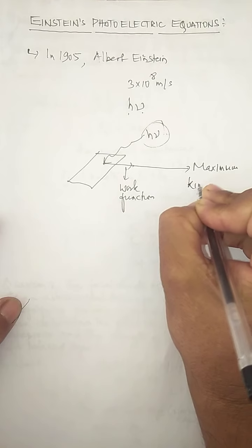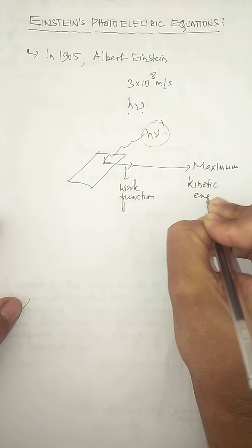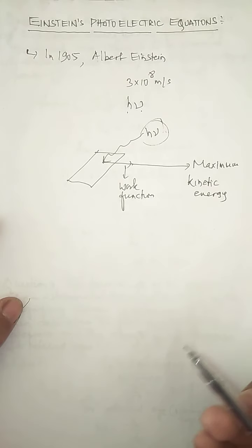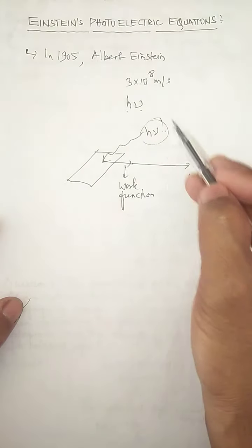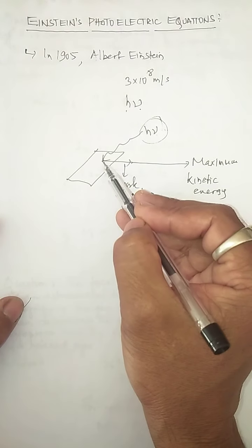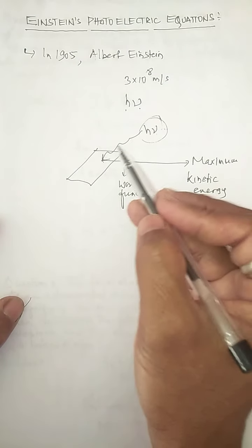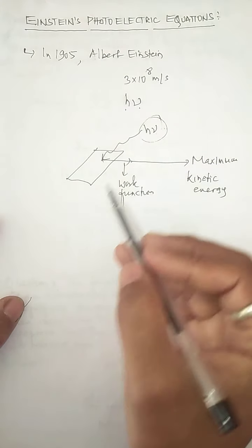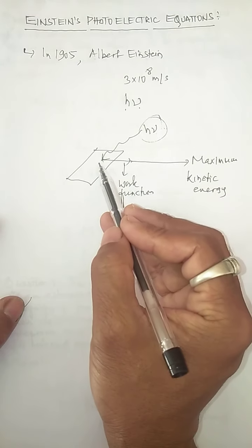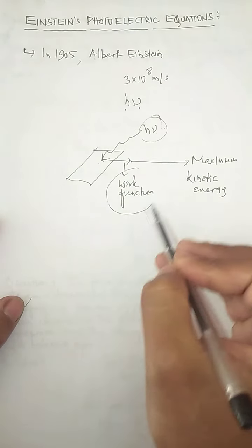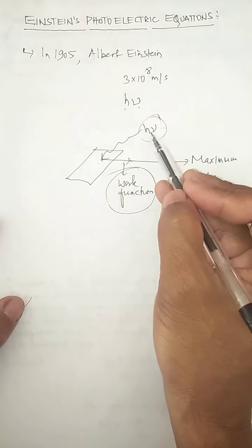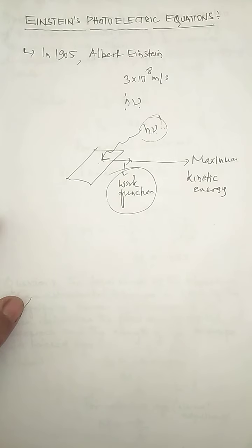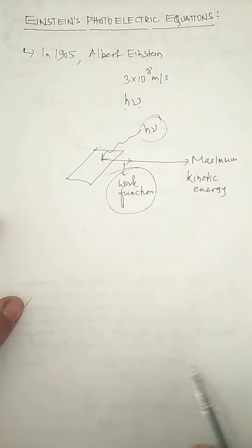The remaining energy of the ejected electron is utilized to move with maximum kinetic energy. So when energy of one photon hν is incident on the metal plate, any one of the electrons present absorbs that energy hν. That absorbed energy is utilized to eject the electron — for which we need the work function — and the remaining energy is used to move with maximum kinetic energy.